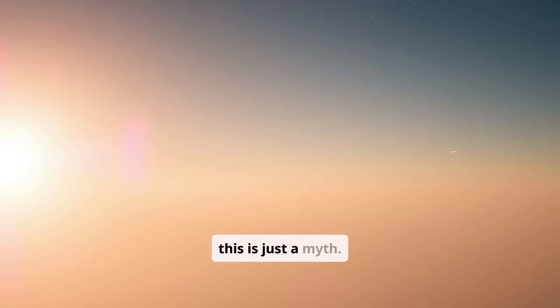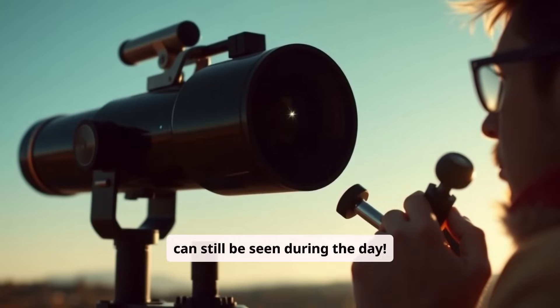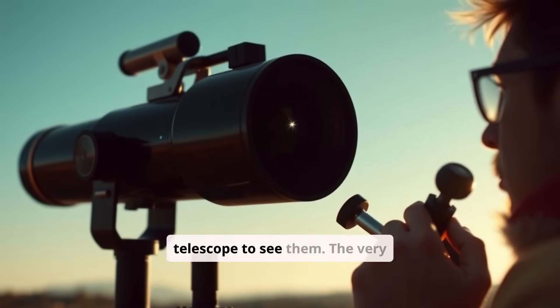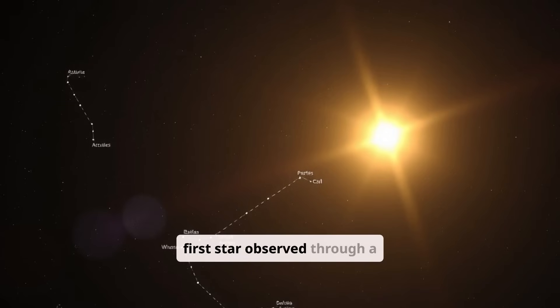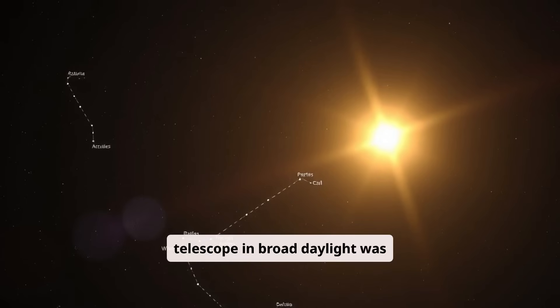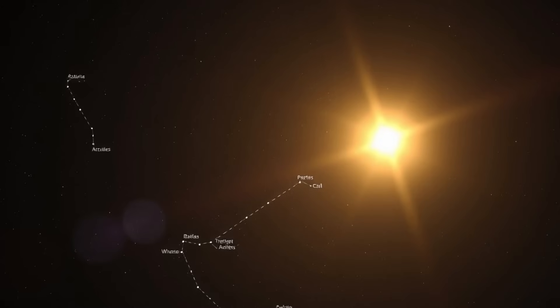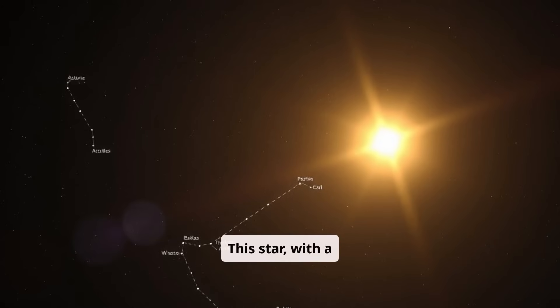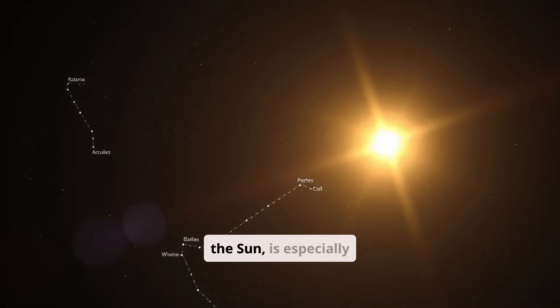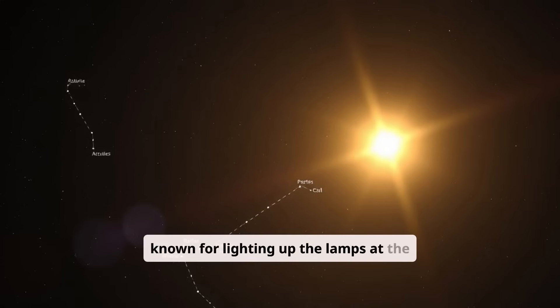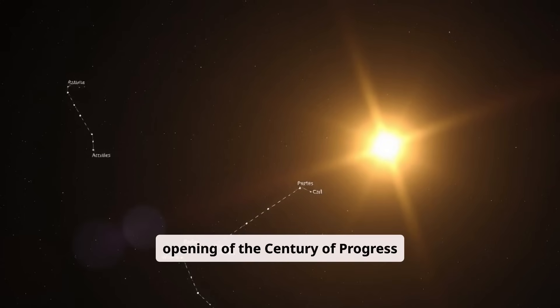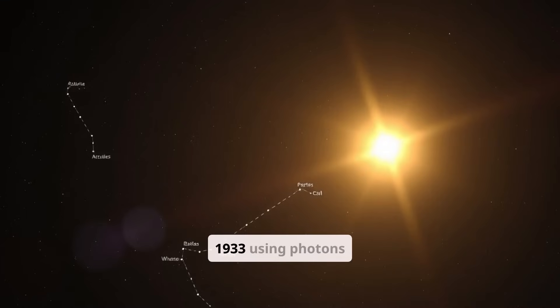However, some stars can still be seen during the day. We usually need a telescope to see them. The very first star observed through a telescope in broad daylight was Arcturus from the Boötes constellation, in the year 1635. This star, with a diameter 25 times that of the sun, is especially known for lighting up the lamps at the opening of the Century of Progress exhibition in Chicago in 1933 using photons captured from its light.